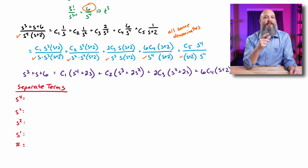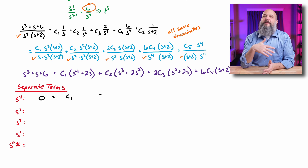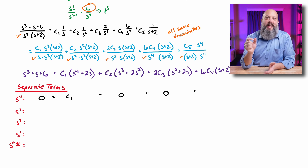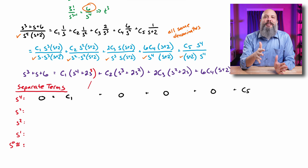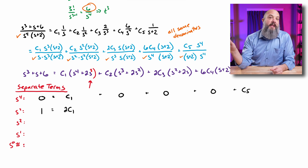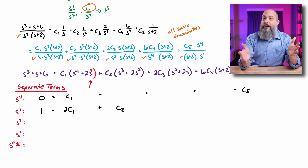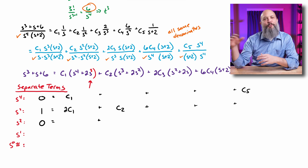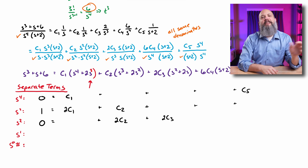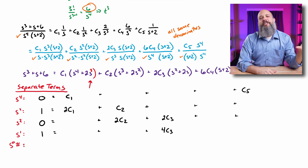I can create five equations by separating terms by their power of s: s⁴, s³, s², s¹, and s⁰. For s⁴: 0 = c1 + c5. For s³: 1 = 2c1 + c2. For s²: 0 = 2c2 + 2c3. For s¹: 1 = 4c3 + 6c4. For s⁰: 6 = 12c4.